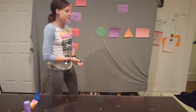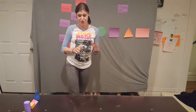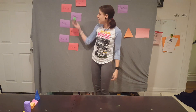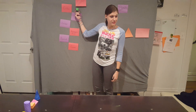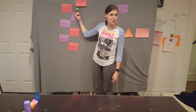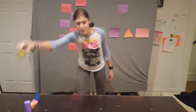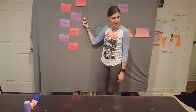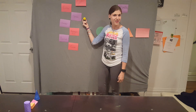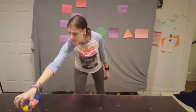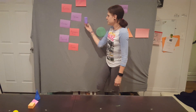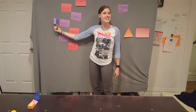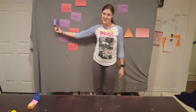Now let's review the shapes that we just learned. This shape is called a cube — say it with me: cube. This shape is what we call a sphere — say it with me: sphere. Good job! Now this shape is called a cylinder — say it with me: cylinder. Good job.